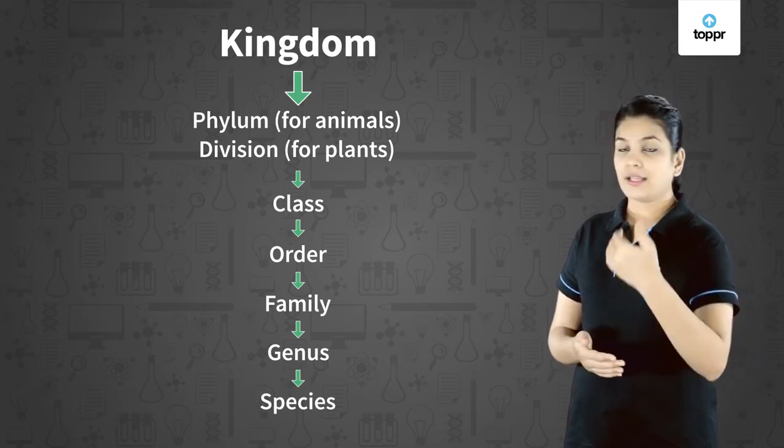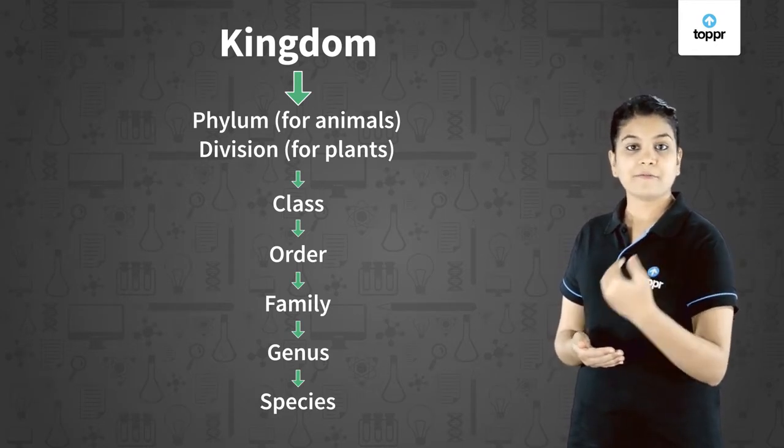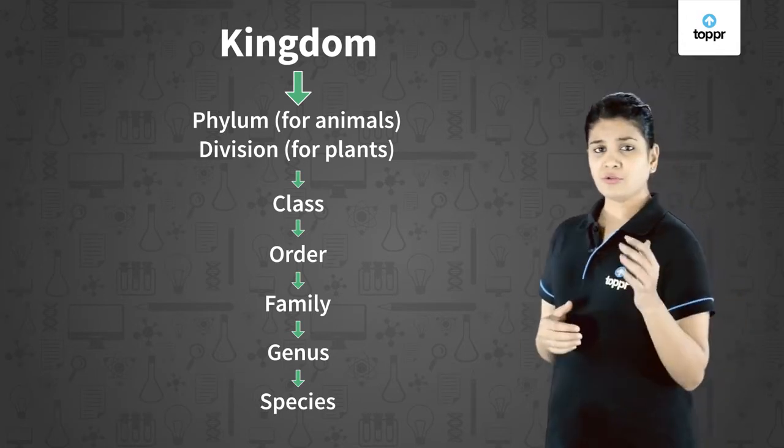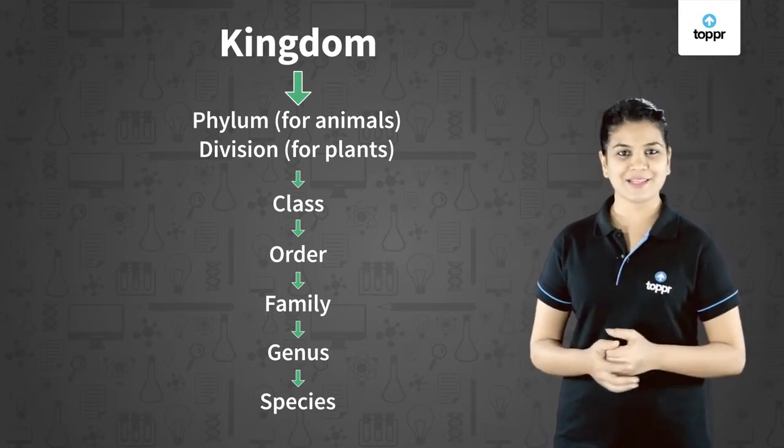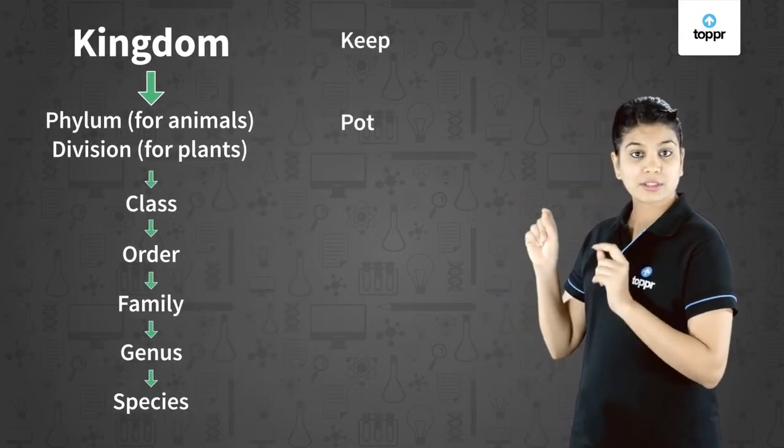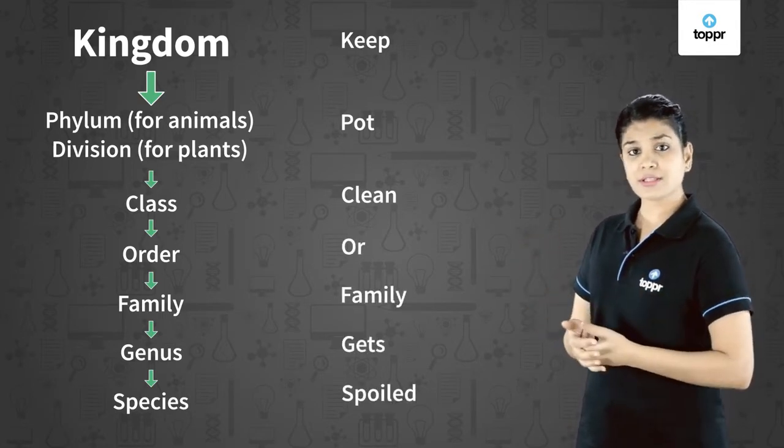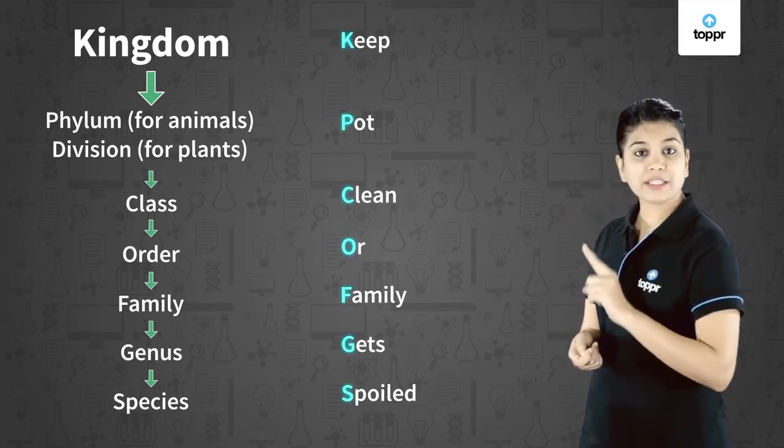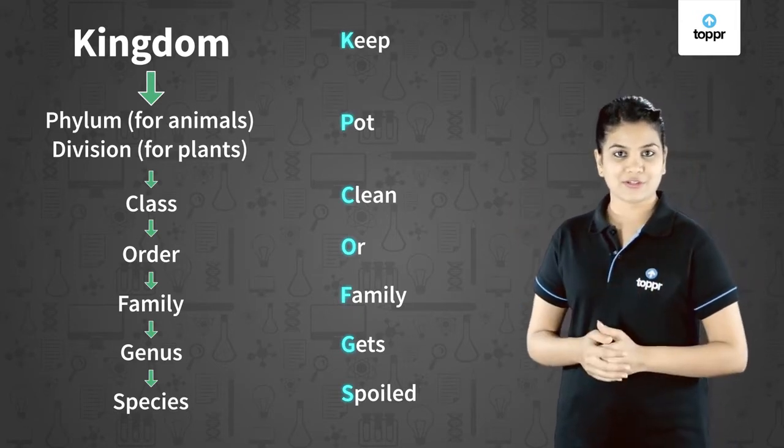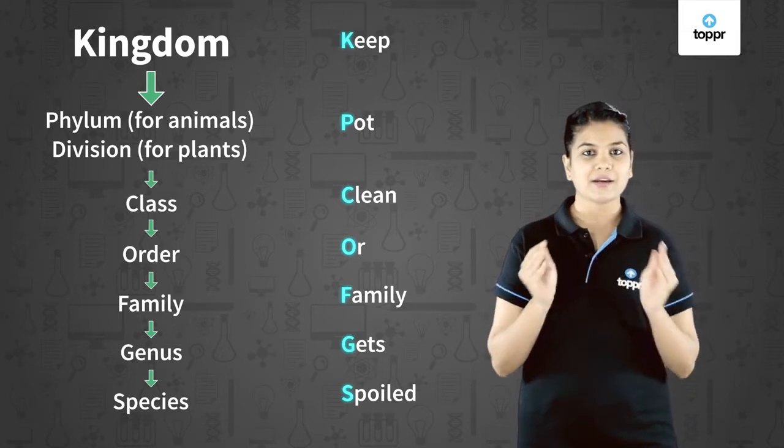So we can say kingdom, phylum or division, then class, order, family, genus, and finally species. You might find it difficult to remember the sequence. For this I have a mnemonic which says: Keep Pot Clean Or Family Gets Spoiled. If you notice the first letter of each word signifies the different levels of classification, making it easy to remember the sequence.